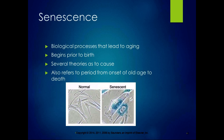By definition, senescence is the biological process that leads to aging, and it supposedly begins prior to birth. There are different theories as to why we age. Sometimes senescence refers to the period from the onset of old age until death — I'll leave it up to you to decide when the onset of old age is. But there are actually physiological effects that cause aging.